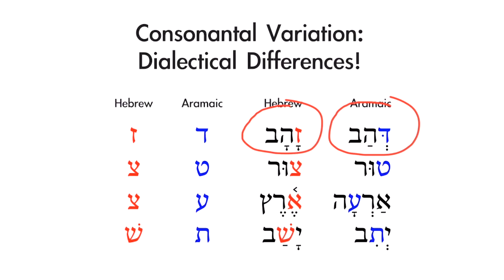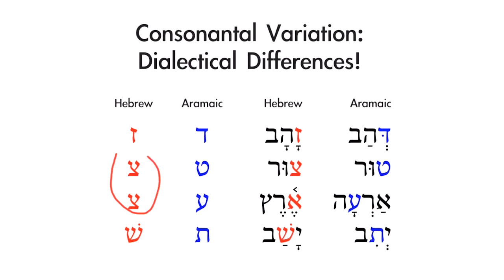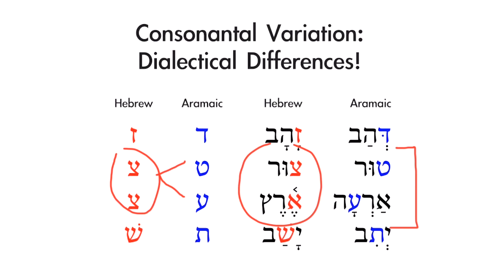If you can connect the Zayin and the Dalet in your mind, you'll reduce the strain of vocabulary memorization. The Hebrew Sade can be represented as either Tet or Ayin in the Aramaic system. Look at two Hebrew examples: Sur, the word for rock, and Eretz, the word for land. In Aramaic, Sur becomes Tur — the Sade becoming Tet — and Eretz becomes Ara — the Sade becoming Ayin. In each instance the Sade has become something slightly different.